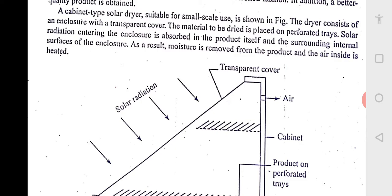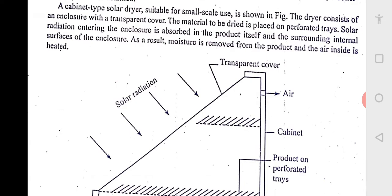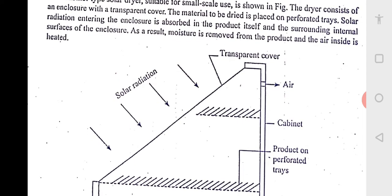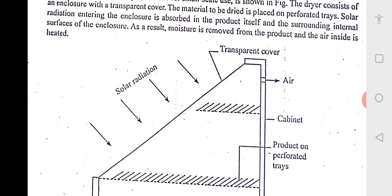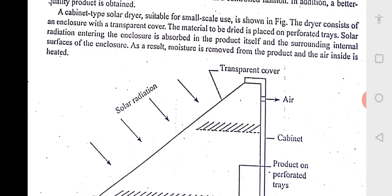A small solar trap dryer is shown in the figure. It consists of an enclosure with a transparent cover. The material to be dried is placed on the perforated trays. You can see the hatched lines, two hatched lines are there. Both are the perforated trays. Perforated means they have got holes in the bottom so that air can move in and out.